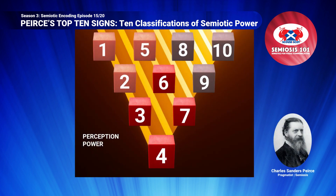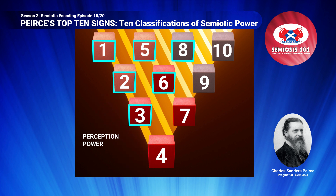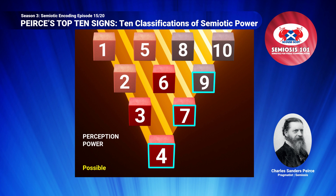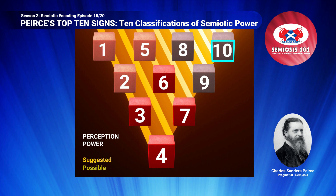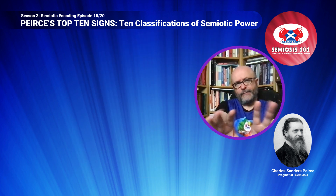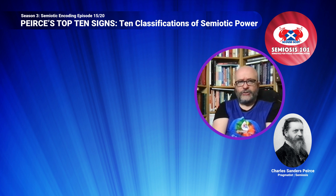Peirce illustrates his ten semiotic sign classes in an inverted pyramid. When looking at Peirce's ten sign classes, we read them in rows diagonally downwards from sign one. In doing so, we can see classes one, two, three, five, six and eight are grouped in the top left section of the pyramid. These have a perception power of possible intensity of semiotic communication. Below them are a strip of signs four, seven and nine with an intensity of the suggested. Sign ten in the top right-hand corner has an intensity of the resolved.